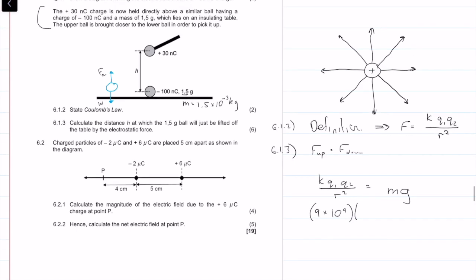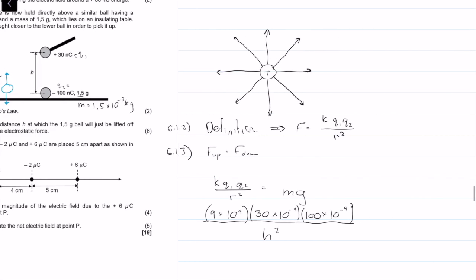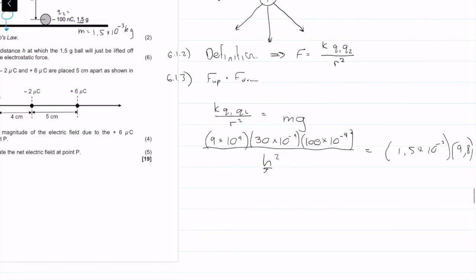We know what K is, it's Coulomb's constant which is 9 times 10 to the 9. We know Q1 is 30 times 10 to the minus 9, Q2 is 100 times 10 to the minus 9, I'm going to use magnitudes. Over, and now it's going to be H squared, that's our height, is equal to our mass which is 1.5 times 10 to the minus 3 times gravity which is 9.8.